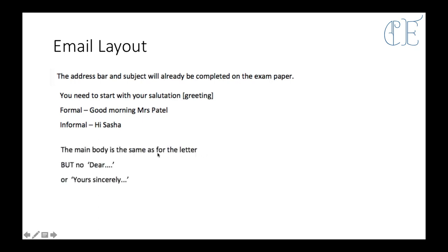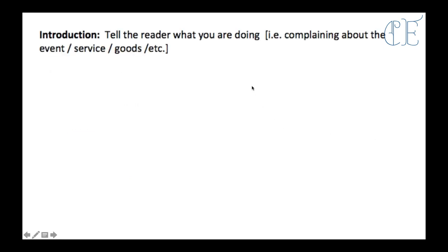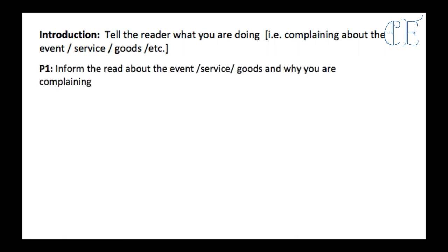Now the main body is the same as a letter, but we don't use dear or yours sincerely in an email. So the introduction: after you've written your salutation, your greeting — hi or good morning, good afternoon — you need to tell the reader why you're emailing them. So you might be complaining about something, you might be asking about facilities that they have, you might be asking about a job, something like that. Anything that you are writing about, you need to write an introduction. Paragraph one will be to inform the reader about the event or the service or the goods or whatever it is that you've got to email them about. And if it's a complaint, why you're complaining — so basically why you're writing to them would be the first paragraph. It's not always going to be a complaint, so why are you writing to them?